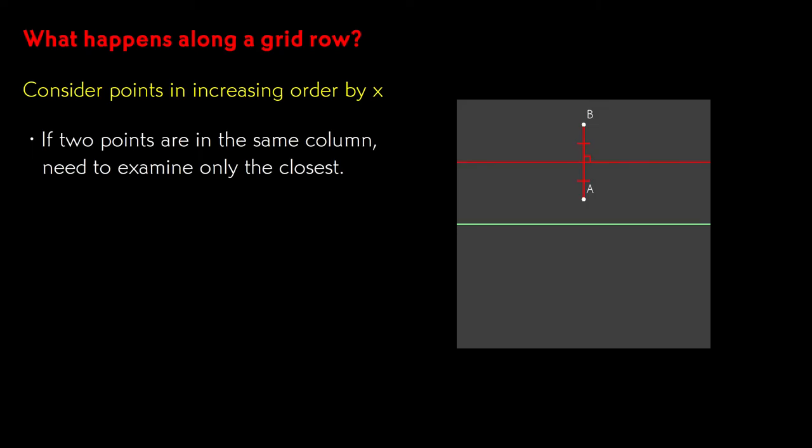First, note that if we have two points of interest in the same column of the image, we only ever need to look at the closest one. The boundary between the two regions of influence will be horizontal and can never intersect the row.